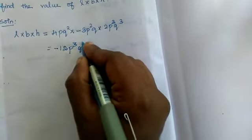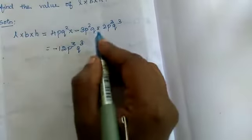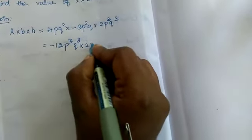Now Q square into Q power 3. Now we add the powers, into 2PQ.